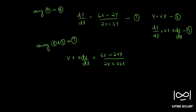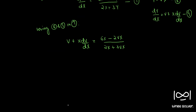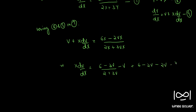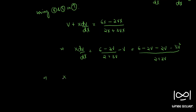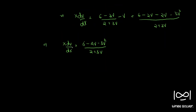The reason this is homogeneous is that dy by dx can be written as a function of Y by X. Differentiating Y equal to vX with respect to X, we have dY by dX equal to v plus X dv by dX. Substituting and simplifying, X dv by dX equals 6 minus 2v over 2 plus 3v minus v, which gives 6 minus 4v minus 3v squared over 2 plus 3v. This is amenable to separation of variables.